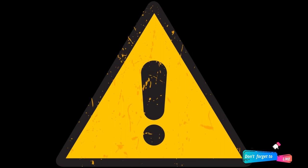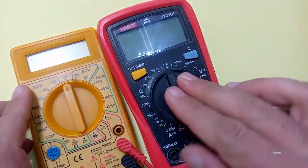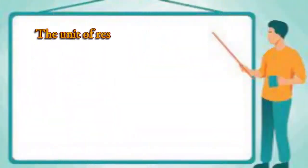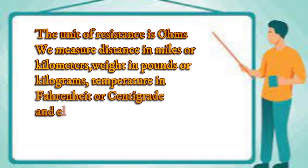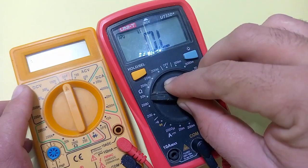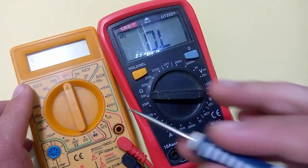Now to find the resistance of different resistors, we can use different types of multimeters such as analog as well as digital multimeters. The unit of resistance is ohms. We measure distance in miles or kilometers, weight in pounds or kilograms, temperature in Fahrenheit or centigrade, and electrical resistance in ohms. The ohm is an international unit of resistance. This symbol you see every time you measure resistance is known as ohm.